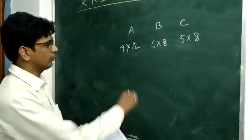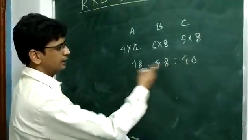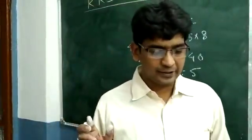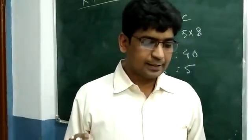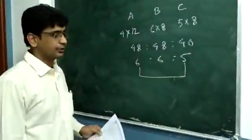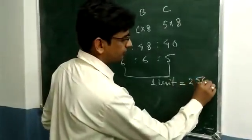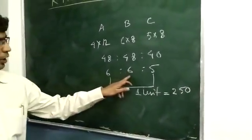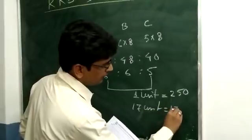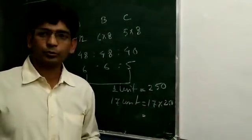We have to get the profit ratio. The profit ratio is 4×12 : 6×8 : 5×8, which gives 48 : 48 : 40. The annual profit of A is 250 more than that of C. 1 unit equals 250, so total profit for 17 units is 17 into 250 equals the answer.